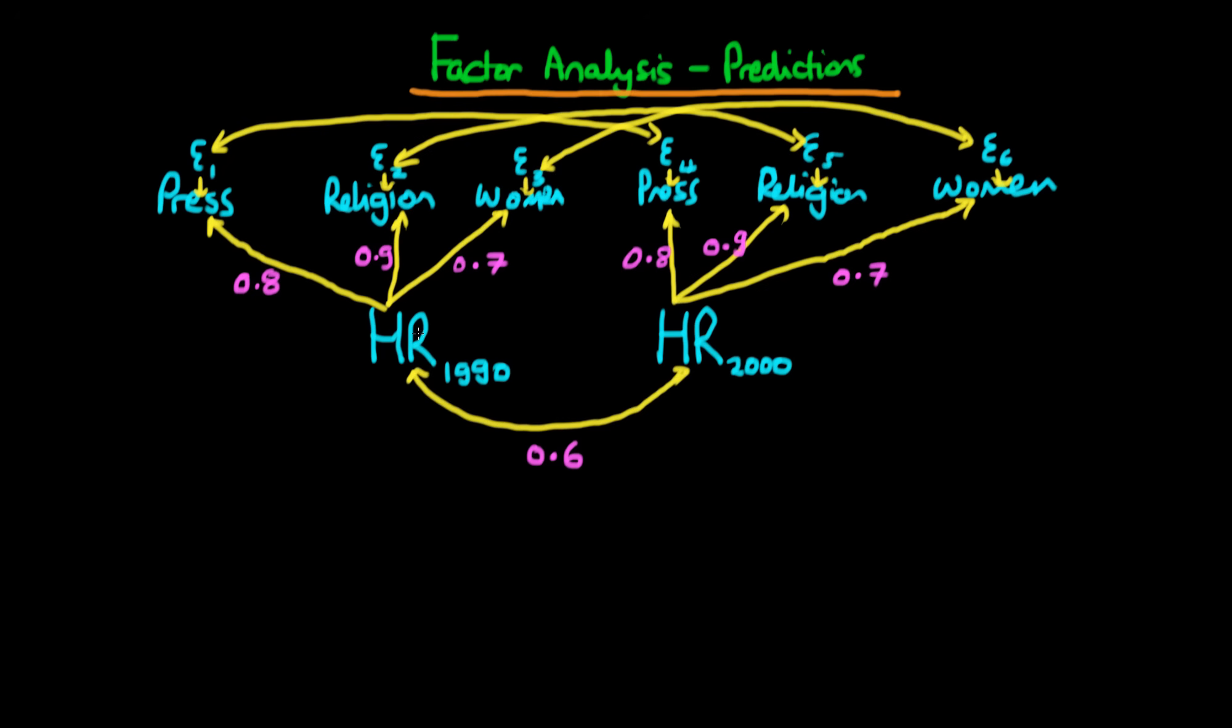And what we hypothesize is that these three variables are indicative of an unobserved underlying measure of human rights within that country. So we suppose that there is a measure of human rights in 1990, which is this measure here on the left, and that there is a measure of human rights in the year 2000, which is this other latent factor here on the right. And furthermore, we suppose that these two measures of human rights in that particular country are correlated across time, which is what we'd really expect.